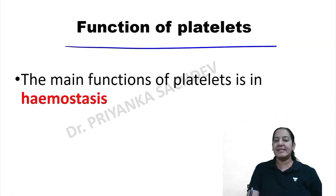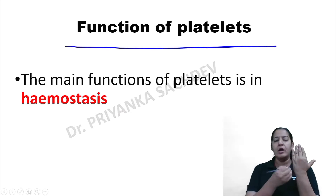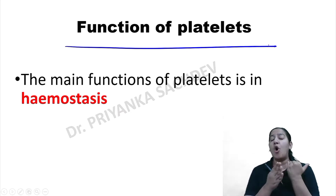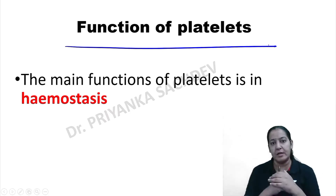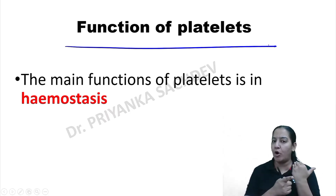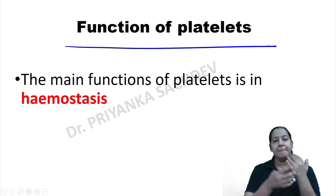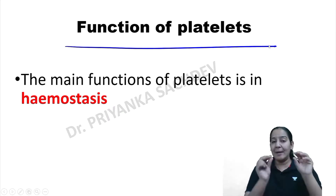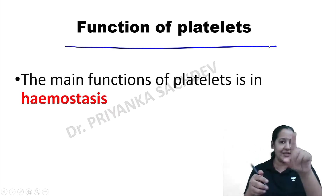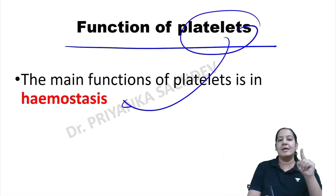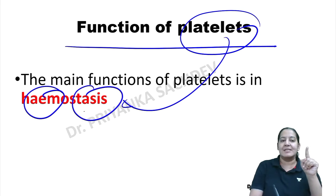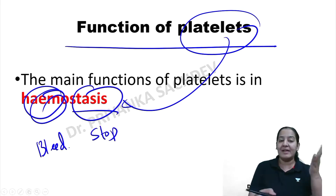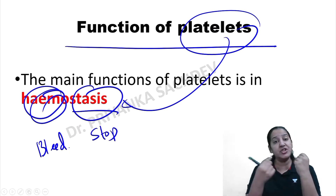What is the function of platelets? Imagine having a cut on any part of the body — bleeding starts. But bleeding stops automatically within the next few seconds or minutes. Why does bleeding stop automatically, even though there is a cut in the blood vessel? There is an injury in the blood vessel just beneath the skin, that blood vessel is open, and the cut area is sealed by the platelet. This is known as hemostasis. Stasis means stoppage and hemo means bleeding. Platelets are required to stop bleeding and seal the injured area.